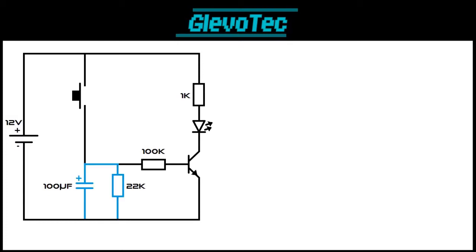The capacitor and the parallel resistor form the timing part of the circuit. If we close the switch current will start flowing to the capacitor charging it almost instantly.